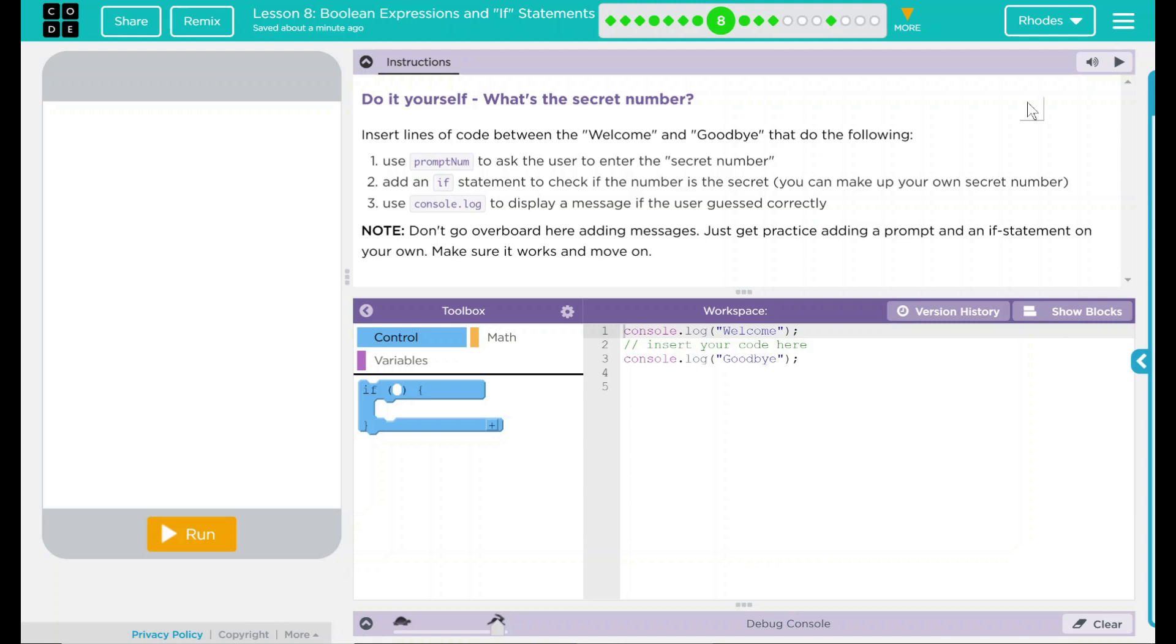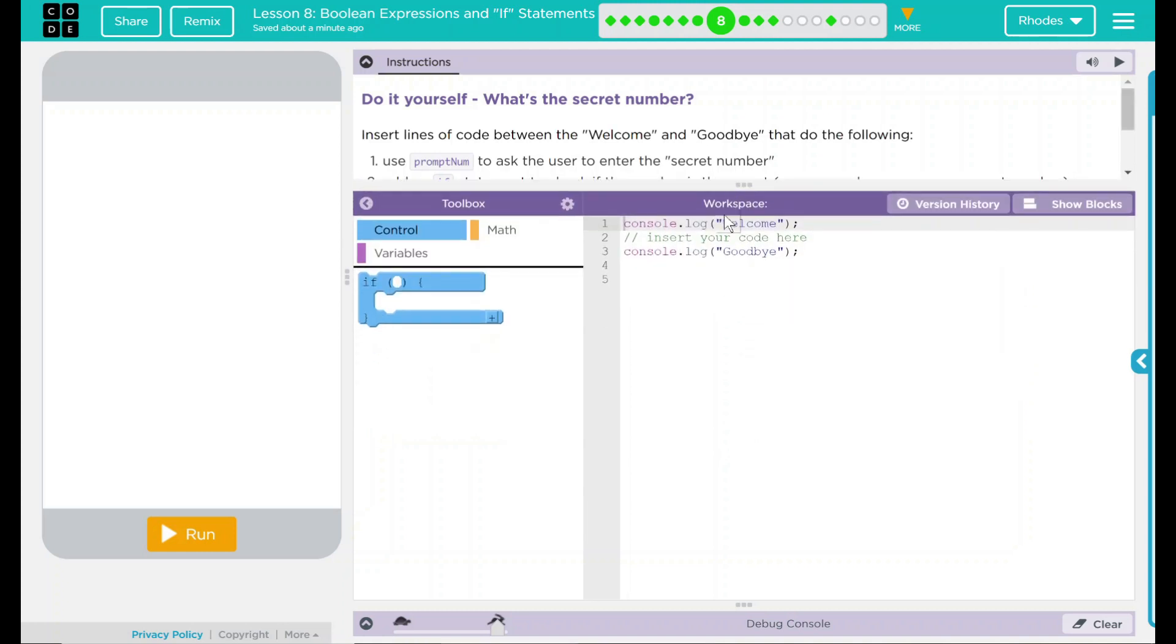Well, this sounds very interesting. What I think we have to do here is add a prompt num for a secret number and set an if statement in our code down here to check for that number. Seems pretty exciting. So let's go ahead and dive in.